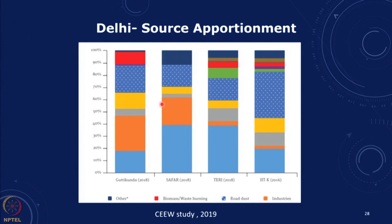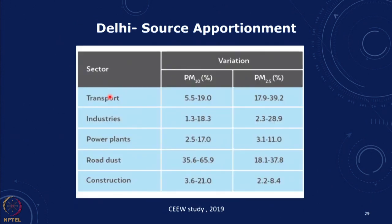A study by CEEW, a Delhi-based think tank, reviewed different source apportionment studies done by IIT Kanpur, TERI, Guttikunda, and SAFAR. There is variation between these studies, so there is uncertainty in source apportionment. Looking at PM2.5 — which is most important from a health point of view because small particles enter our respiratory tract — transport accounts for between 17.9 and 39 percent, a quite wide range that makes a lot of difference in terms of final impact.